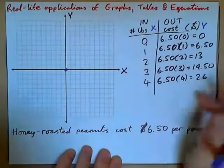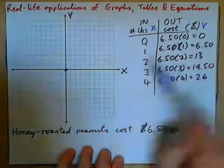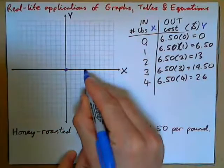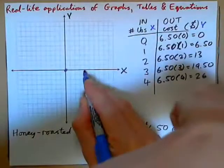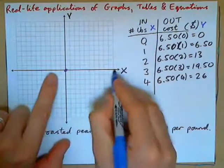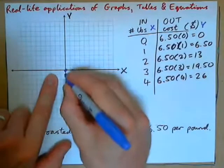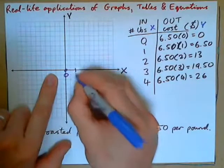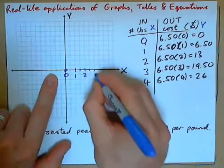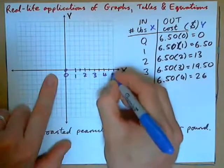If I look at my pounds, they go from 0 to 4. So 0, 1, 2, 3, 4 would fit here. For the X axis, make 0, then 1, skip 2, make 2, skip 2, make 3, skip 2, make 4, skip 2, make 5.